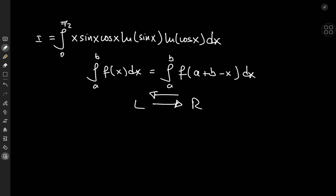This property is very surprisingly popularized across the internet as king's rule or king's property, although I have not read a single piece of mathematical literature calling this king's rule, and I have never heard of a mathematician who claims to have discovered this property, which is just a basic property of the definite integral itself. Anyway, in our case a equals zero and b equals pi/2.